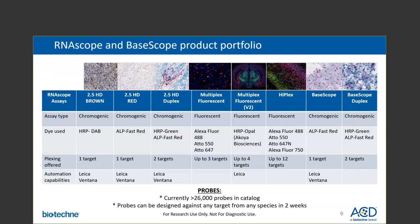If your target of interest is shorter than 300 nucleotides and you're studying splice variants or point mutations, then the BaseScope assays will be the right choice for you. Currently, the BaseScope single-plex assay is available on all platforms, while the BaseScope duplex assay is available on the manual platform. As of today, we have over 26,000 target probes in our catalog. Custom probes can be designed against any targets from any species in as little as two weeks.